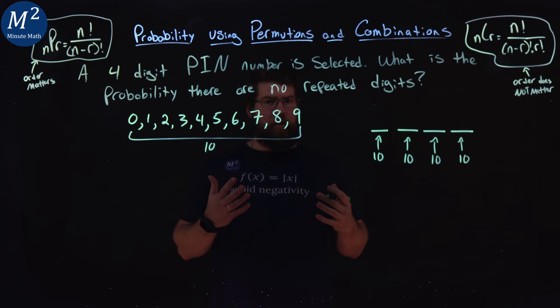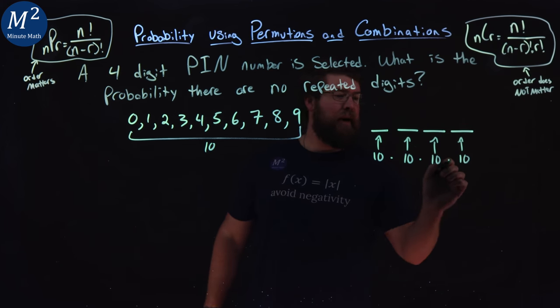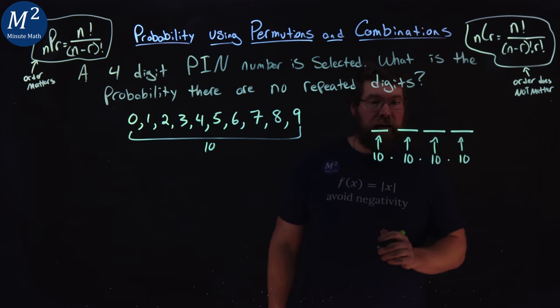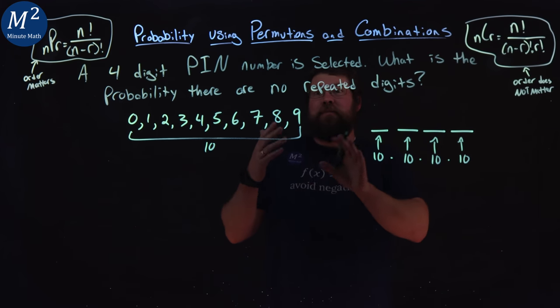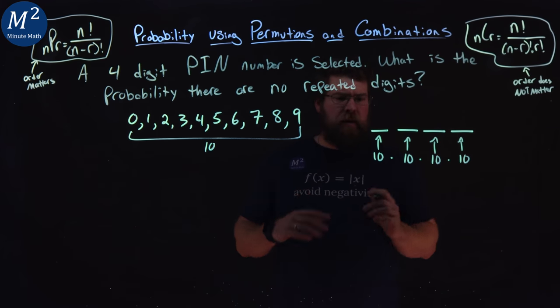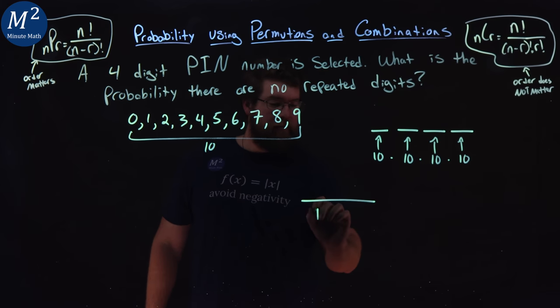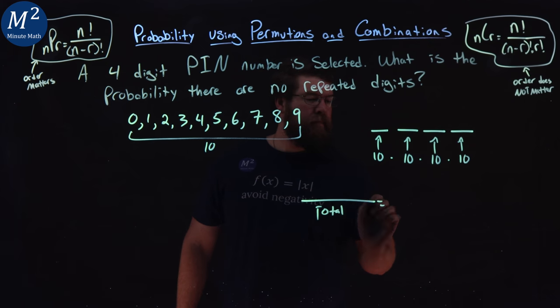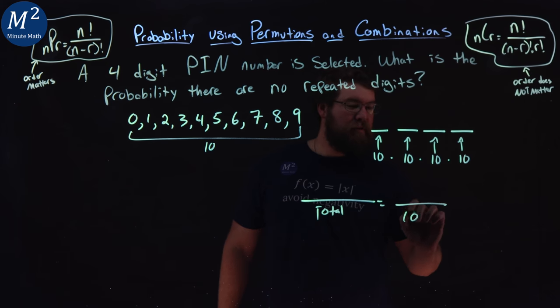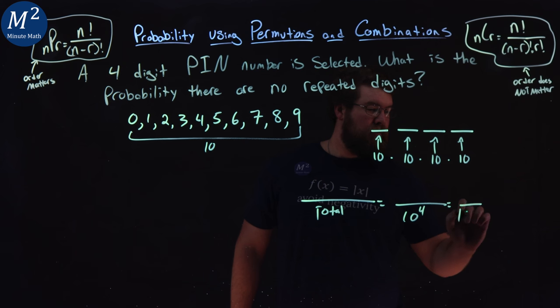So there is a total of 10 times 10 times 10 times 10 ways to create a PIN number. So the total here is going to be 10 to the fourth power, which is 10,000.